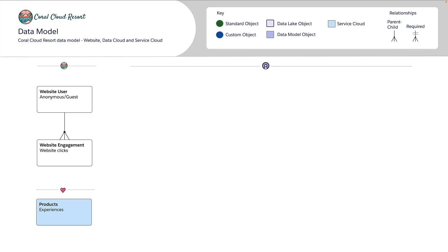The first thing we need to do is discuss data sources — what do we need to support our use case? We have a website where people will be logging in as website users, and they'll be clicking and viewing things for engagement. What we're looking to track is what featured experiences — spa days and hiking tours — they're clicking on, which comes from the products table in Service Cloud.